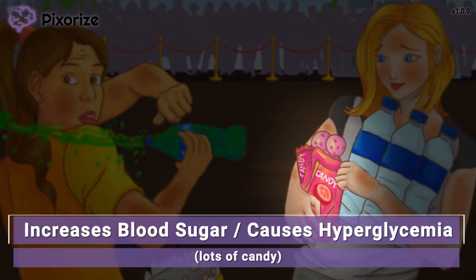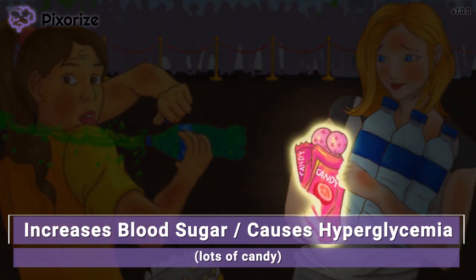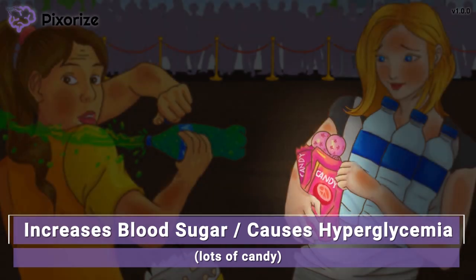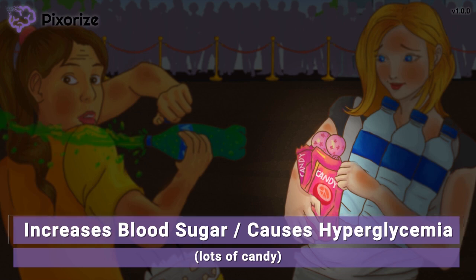The last snack these girls brought is an armful of candy. A lot of candy reminds me of high blood sugar or hyperglycemia, because candy has a lot of sugar. Thiazide diuretics can increase blood sugar, so you'll want to use them cautiously in patients with diabetes mellitus and monitor their blood glucose levels.